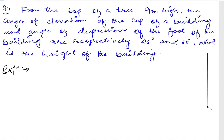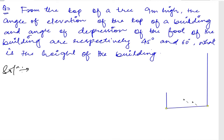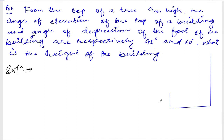This is the building and this is our tree. Let me join these two. The longer one is our building and this is our tree. From the top of a tree nine meters high, we need to find the angle of elevation of the top of the building and the angle of depression of the foot of the building.